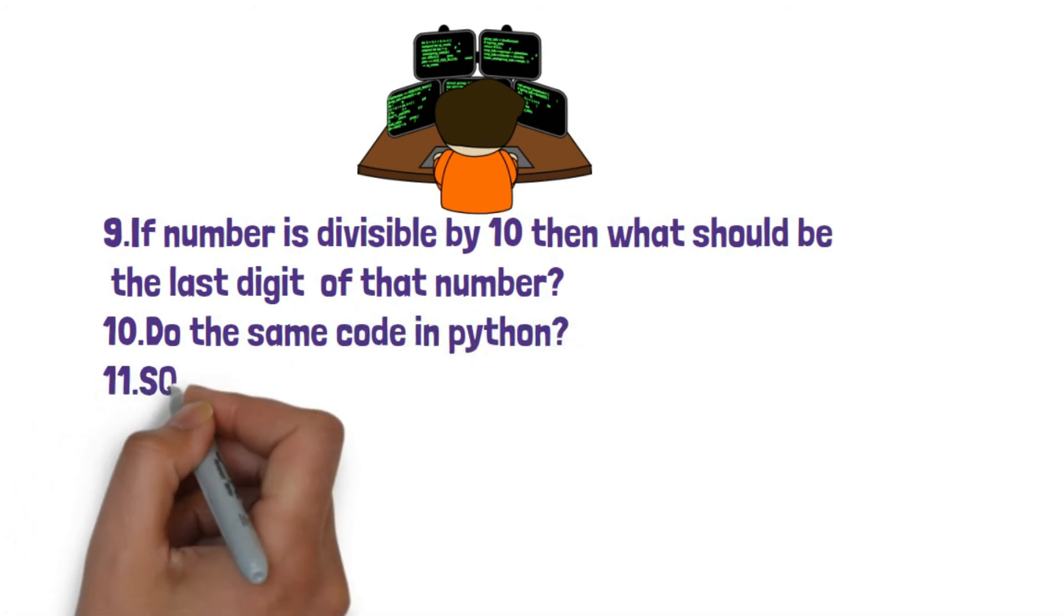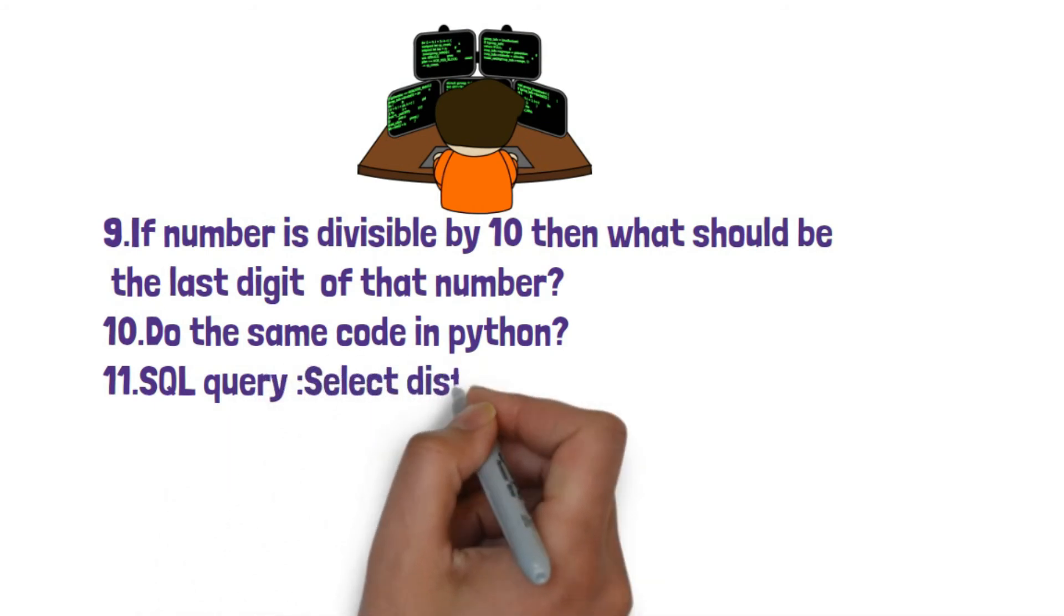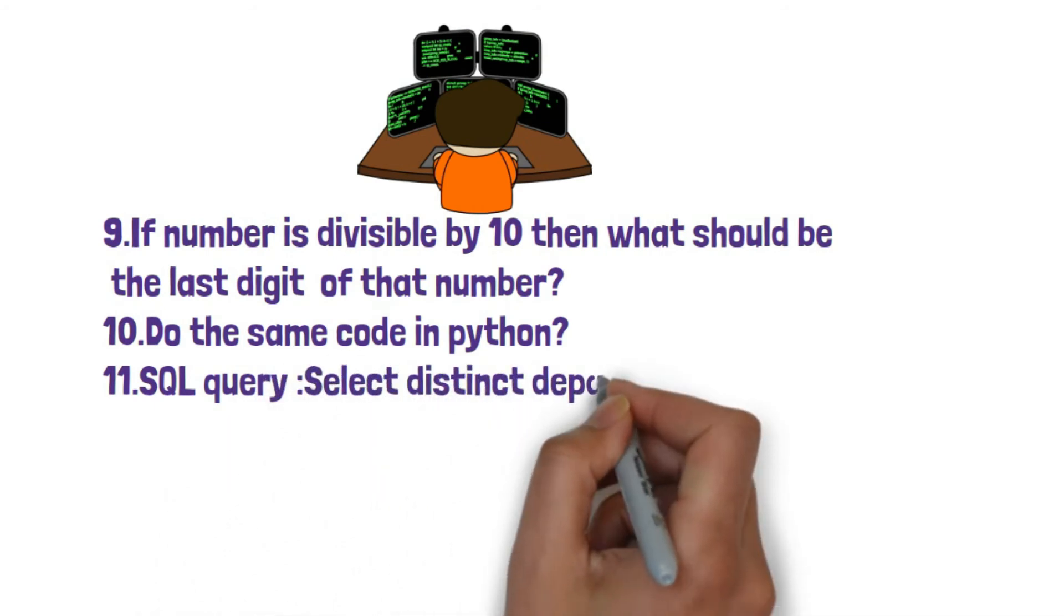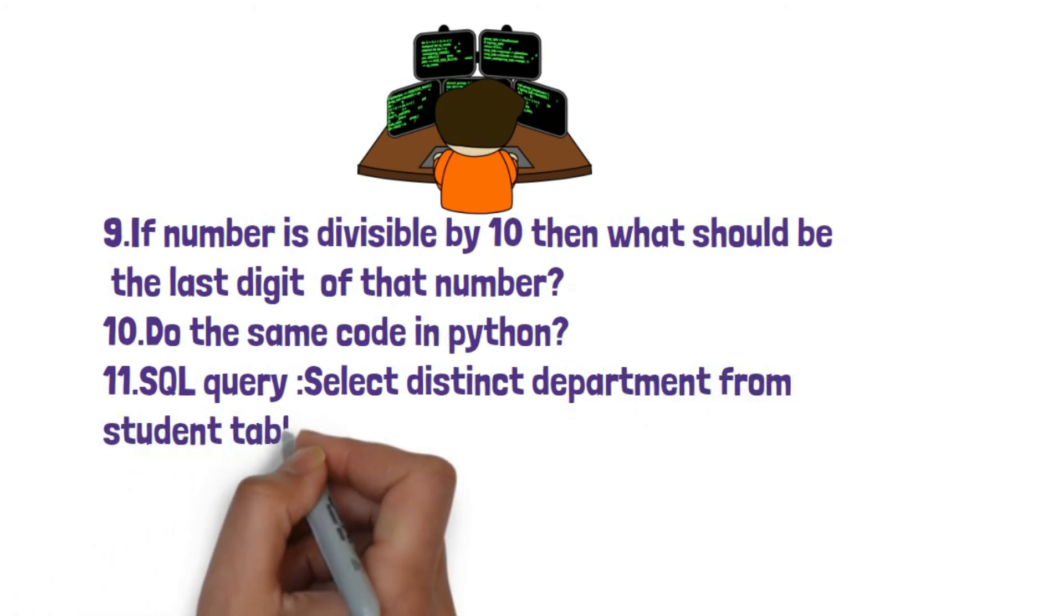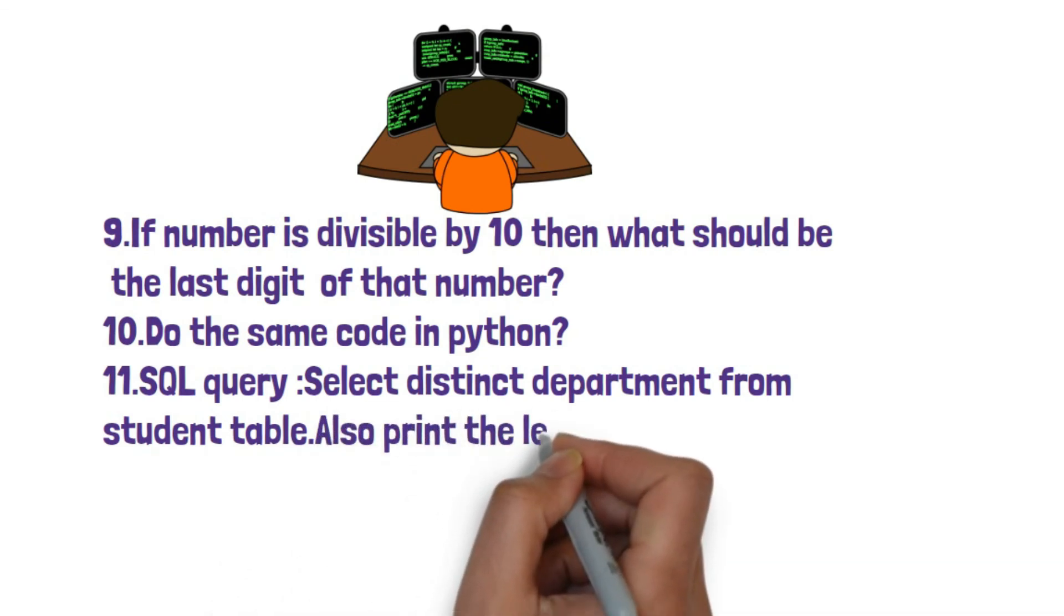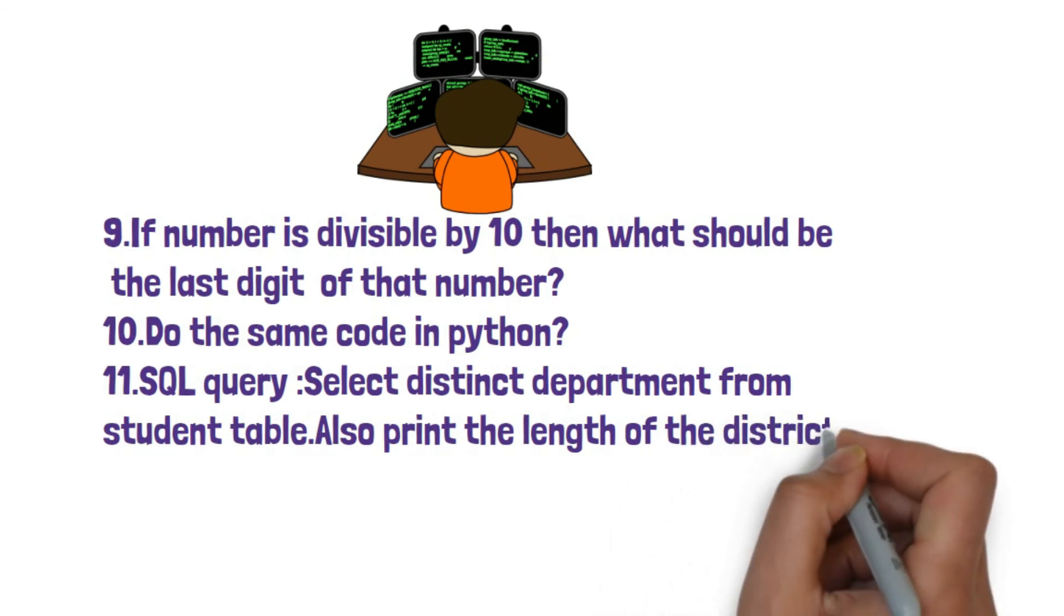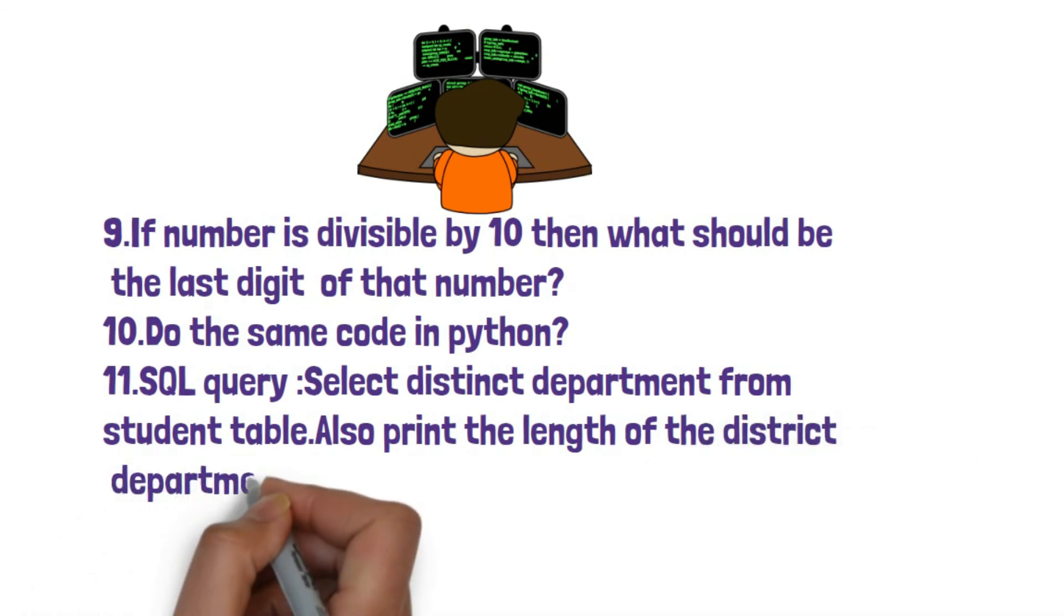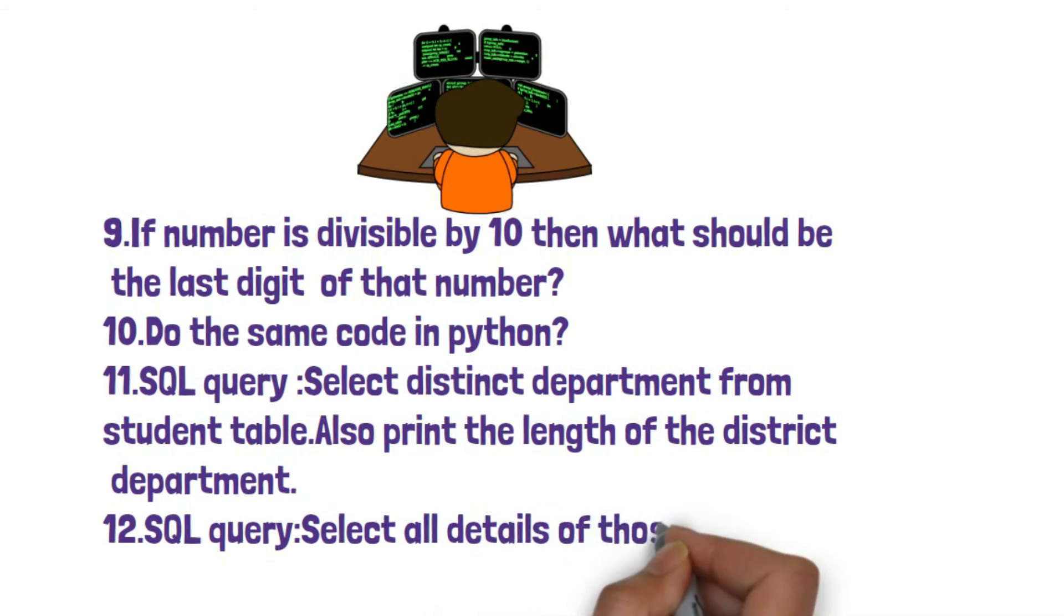Eleventh question was an SQL query. Select distinct department from student table and also print the length of the distinct department. You have to write the query in Superset chat. The last 12th question was another SQL query. Select all details of those students from student table who have joined on 1st January 2020.